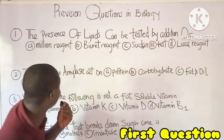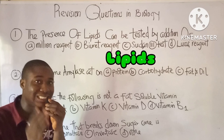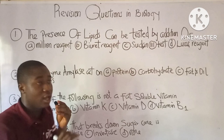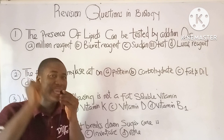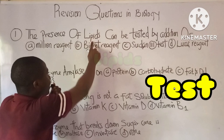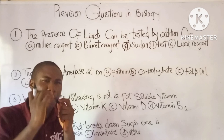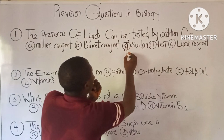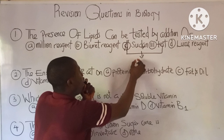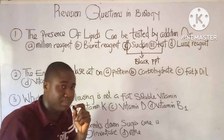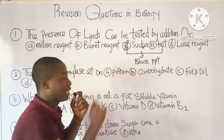The question asks about testing for the presence of lipids. The options include Millon's reagent, Biuret reagent, Sudan-3 test, and Lucas reagent. To test for the presence of lipids, we use the Sudan-3 test. When lipid is present, the Sudan-3 test gives a black precipitate.